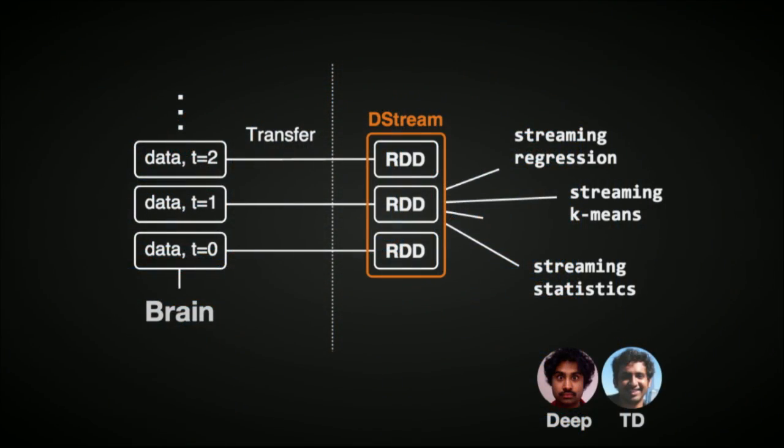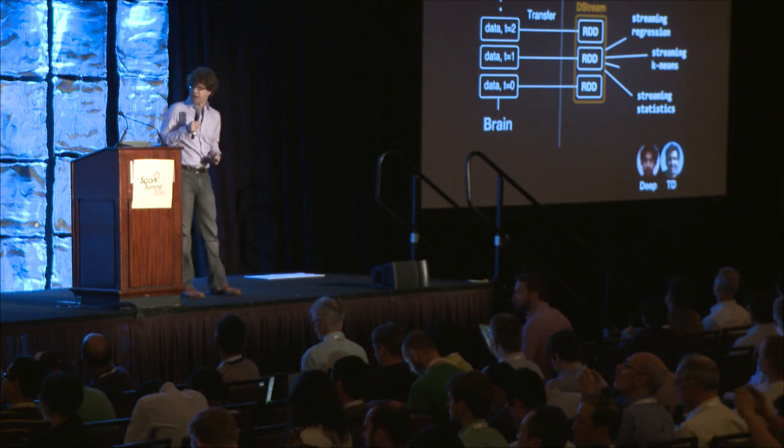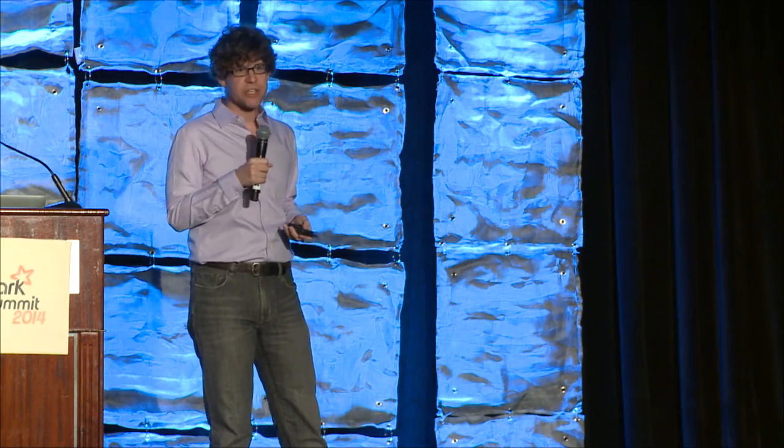So our basic pipeline looks a lot like other, maybe, Spark Streaming pipelines. The ingestion is coming from the brain, and at every moment in time, we're collecting a pattern of neural data, and that's getting immediately transferred to our cluster into a DStream, and then we're developing a family of streaming algorithms that essentially update models for individual neurons over time by using a combination of our own libraries as well as some of the algorithms in MLlib. And I want to thank both Deep and also TD who are helpful in developing these algorithms and developing the infrastructure.